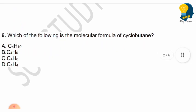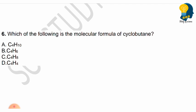Next question: Which of the following is the molecular formula of cyclobutane? Cyclobutane has a cyclic structure with 4 carbons surrounded by hydrogens. You can easily derive the formula. Options are C4H10, C4H6, C4H8, or C4H4. Think and answer — it's a very easy question.